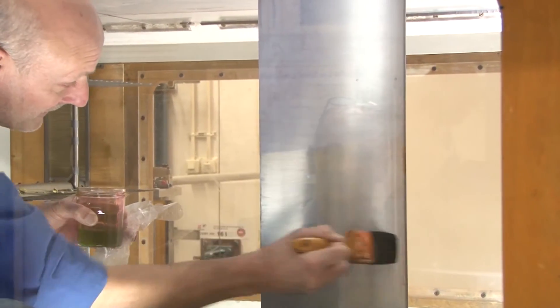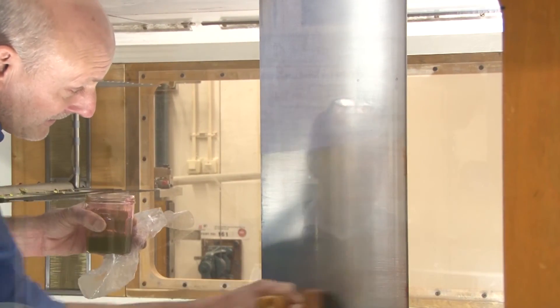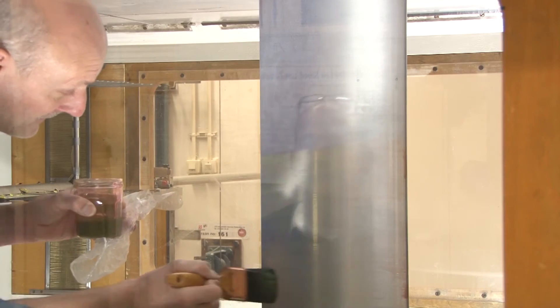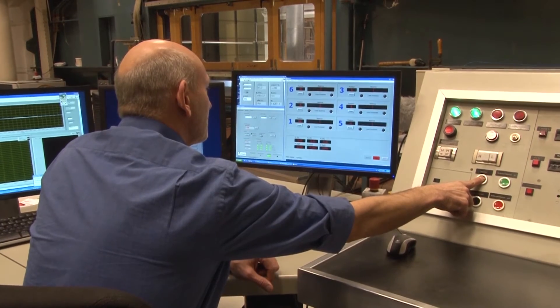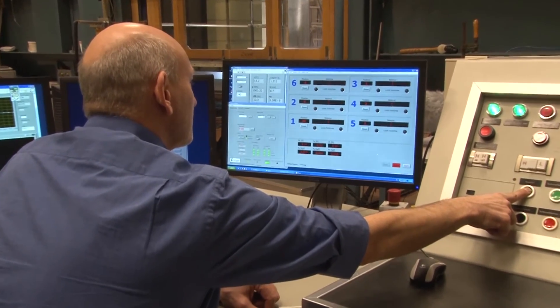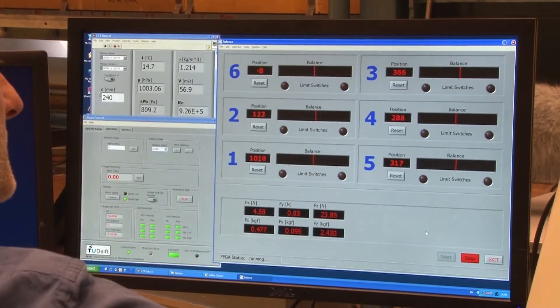As you know by now, a turbulent boundary layer has higher shear stress than a laminar one. We will start at a Reynolds number of 1 million at 2 degrees incidence. This is a view on the controls of the tunnel.